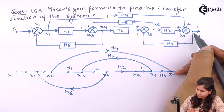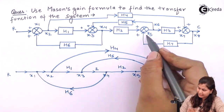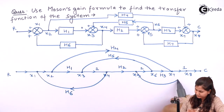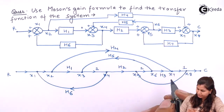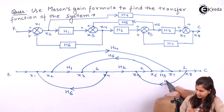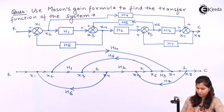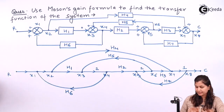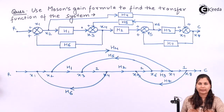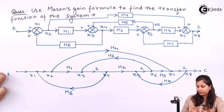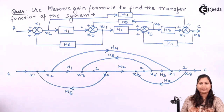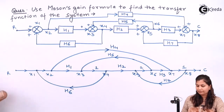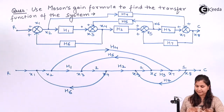Between X8 and X5 we have H7, with the direction of arrow shown. So this is the signal flow graph for the system. We have converted the block diagram into the signal flow graph. Now for this signal flow graph we will apply the Mason's gain formula to find out the transfer function of the system.